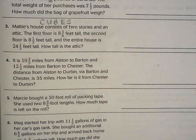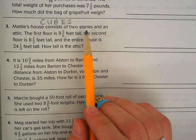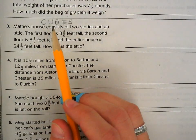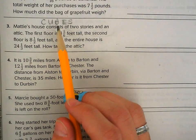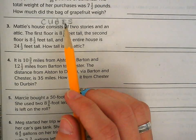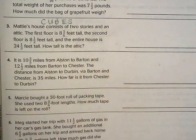Anytime we solve word problems, the expectation is that students solve it using what we call CUBES. C stands for circle the important numbers, U is for underline the question, B is for box the operation word, E is for evaluate an expression, and S is where we solve. Let's start with C.